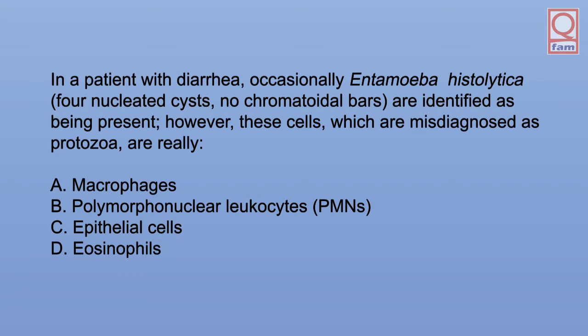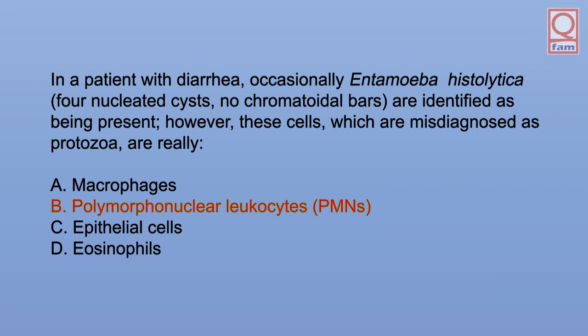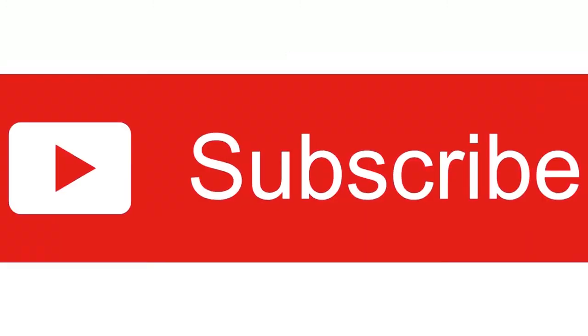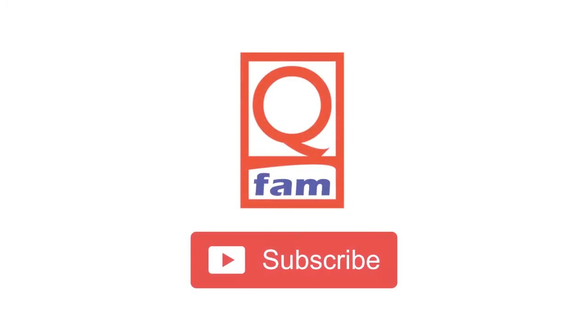In a patient with diarrhea, occasionally Entamoeba histolytica four-nucleated cysts with no chromatoidal bars are identified as being present. However, these cells, which are misdiagnosed as protozoa, are really: A. Macrophages. B. Polymorphonuclear leukocytes. C. Epithelial cells. D. Eosinophils. The answer is B. Polymorphonuclear leukocytes.